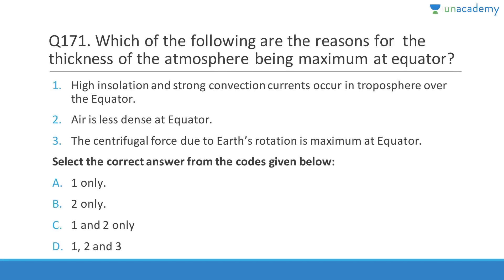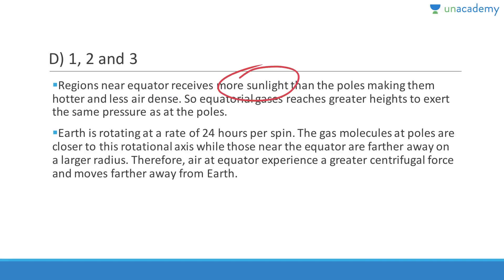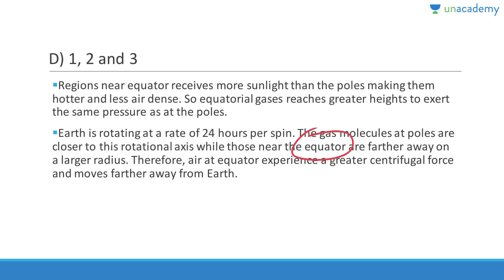The thickness of the atmosphere is maximum at the equator because of high insolation and strong convection currents, air being less dense at the equator, and centrifugal force due to Earth's rotation being maximum at the equator. Regions near the equator receive more sunlight, making them hotter and less air-dense, so equatorial gases reach greater heights. Gas molecules at the equator are farther from the rotational axis, experiencing greater centrifugal force.